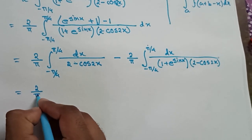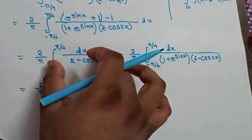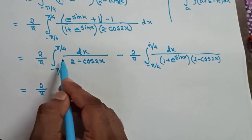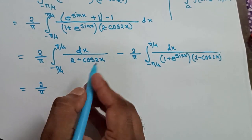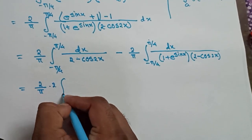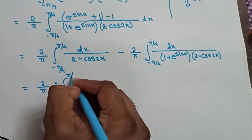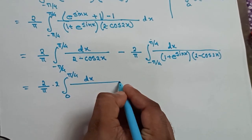Then 2/π. Now here for this part we can use the even function property, so we can take 2 outside and this one will be 0 to π/4 dx.